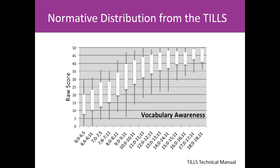Let's take a look at some properties of a normative distribution. This example comes from the vocabulary awareness subtest of the TILs. In this particular example, the normative distribution is represented as a box and whiskers plot. The white box indicates the score range for one standard deviation above and below the mean. The bars, or whiskers, indicate the full extent of the score range. Here we can see that the groups show higher scores on average with age, which is expected for skills like vocabulary that develop with age. At some ages, the spread around the mean is fairly even. These normative distributions are marked with blue arrows, and at these specific ages, the normative distribution approximates a normal distribution.